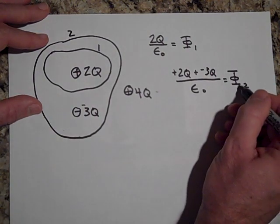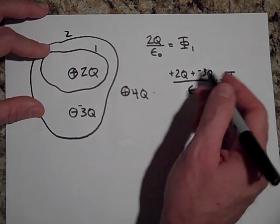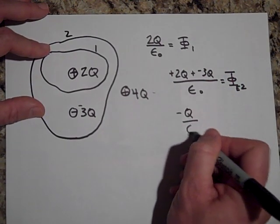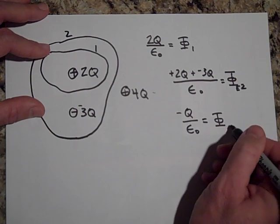Net electric flux through surface two, and so that's just going to be negative Q over epsilon naught. That's what the net flux is through that surface.